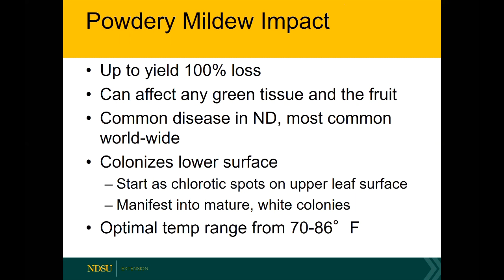Powdery mildew can result in up to 100% yield loss, though it's not really ever going to kill your plant on its own. It can be an added level of stress that, combined with poor fertility, inadequate water, or detrimental weather conditions, could overall kill a plant — but powdery mildew alone won't kill a grape plant or really any other plant. Powdery mildew is what we call an obligate parasite — it cannot live off a dead host, and because of that it's very good at keeping that host alive.